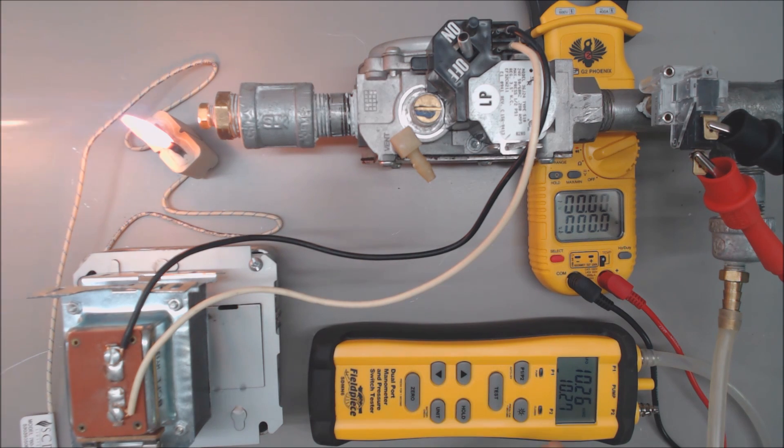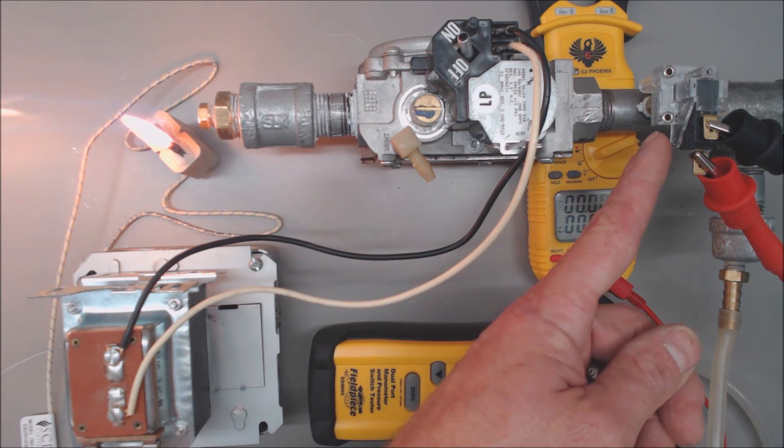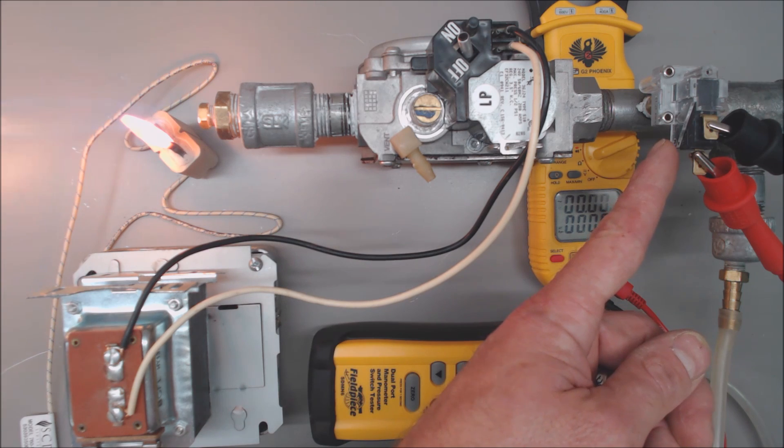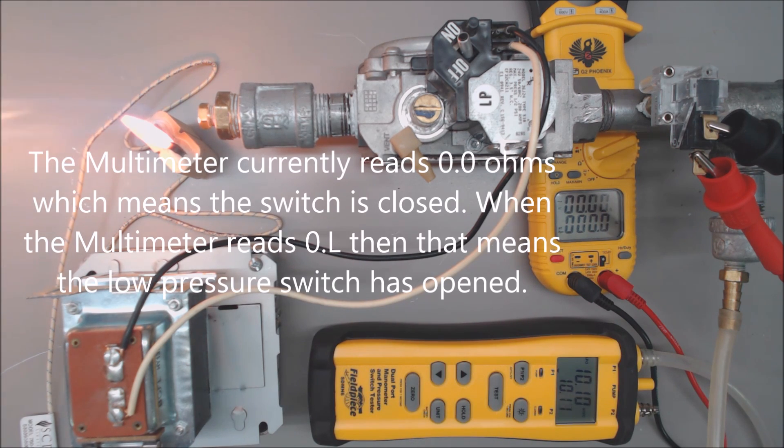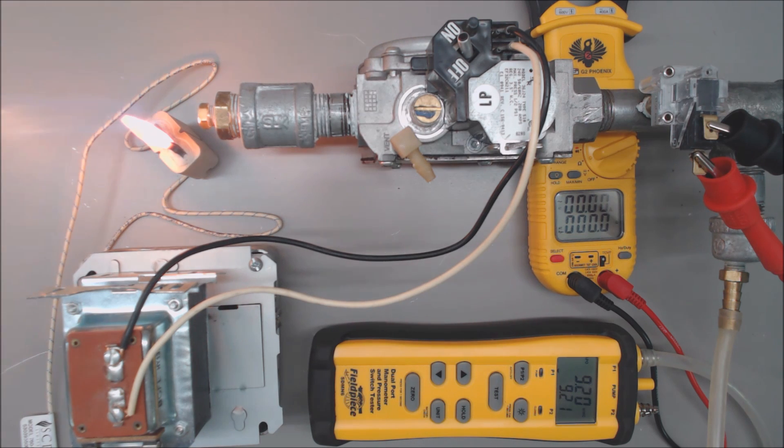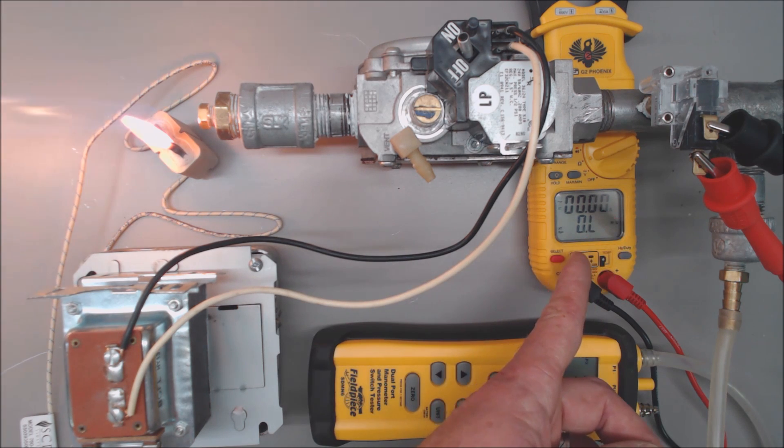Now what I'm going to do is I'm going to limit the gas flow coming in to see when this switch ends up opening up. Okay, right there it seemed to be right about seven to six inch water column when this ended up opening up the electrical circuit.